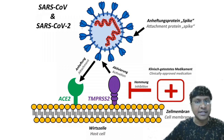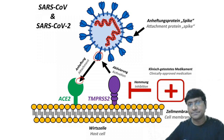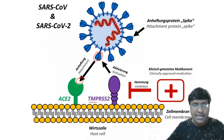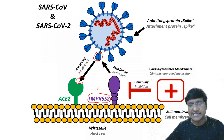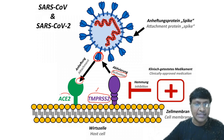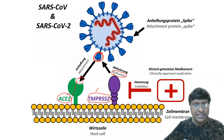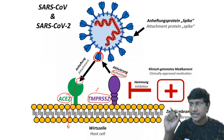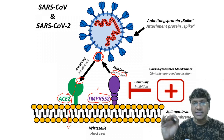The spike protein binds to ACE2 and enters the cell. But before that, on the human cell membrane there is a structure called TMPRSS2. TMPRSS2 causes the activation of the spike protein. Once activated, the spike protein binds to ACE2 and the virus enters the cell through ACE2.